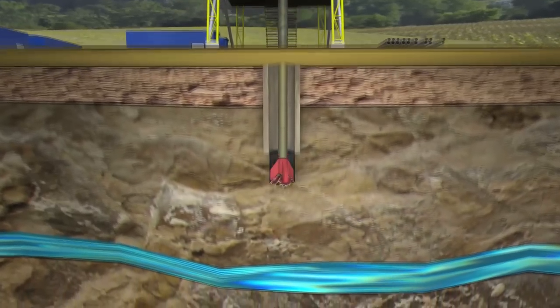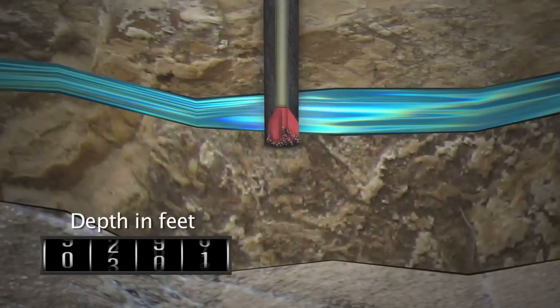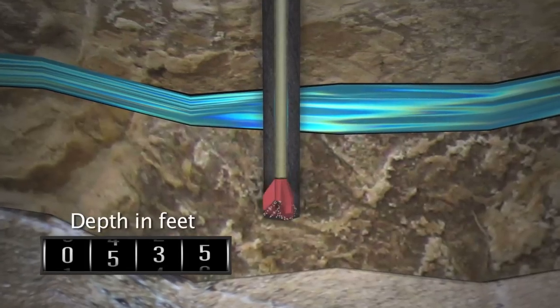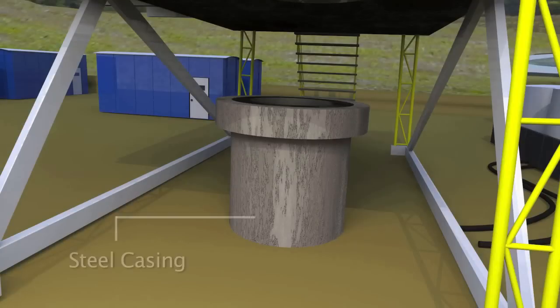Ohio leads the country in inspector notification requirements. The Ohio Department of Natural Resources must be notified before every critical phase of the well construction process, including the setting and cementing of each casing string.